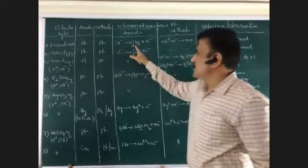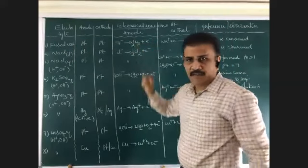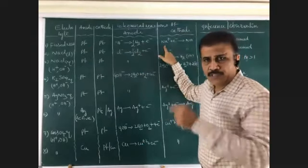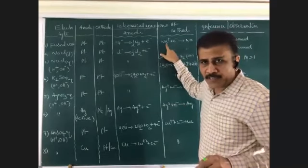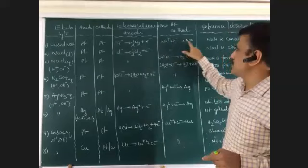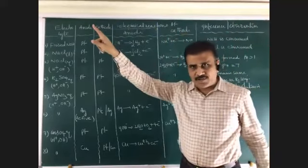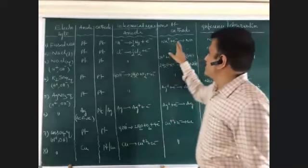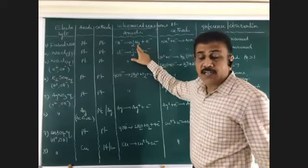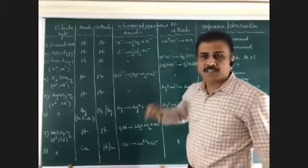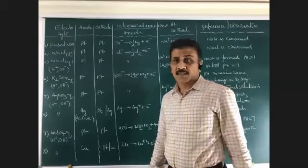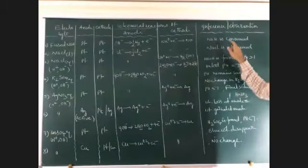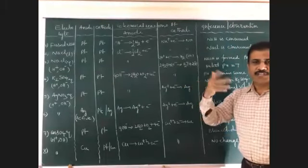If one Faraday of current is passed: 23 grams of sodium is deposited at cathode, 1 gram of hydrogen is liberated at anode, and the volume of hydrogen liberated is 11.2 liters at STP. Finally, NaH is consumed — it vanishes completely. This is the conclusion for electrolysis of fused NaH.